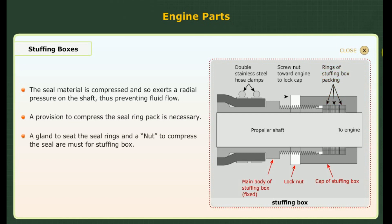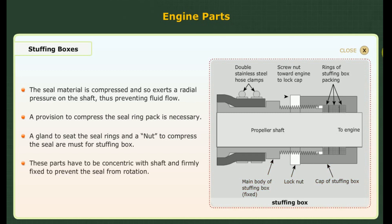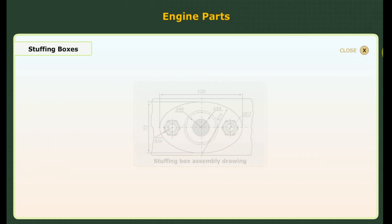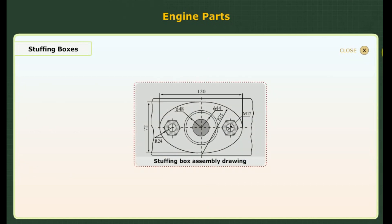A gland to seat the seal rings and a nut to compress the seal are must for a stuffing box. These parts have to be concentric with the shaft and firmly fixed to prevent the seal from rotation. An assembly drawing of a stuffing box is given here.